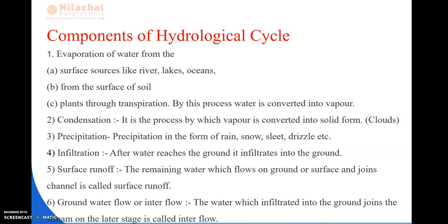Next is precipitation, which occurs in the form of rain, snow, sleet, etc. Next is infiltration — after the water reaches the ground it infiltrates into the ground. Next is surface runoff — the remaining water which flows on the ground or surface and joins the channel is called surface runoff. Next is groundwater flow or interflow — the water which is infiltrated into the ground and then joins the stream on the lateral stretch is called interflow.